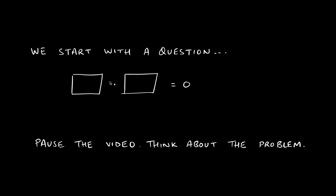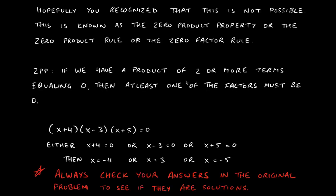So either the zero could be in the first box, or the zero could be in the second box, or they're both zero, because that gives a true statement as well. This idea is known as the zero product property — sometimes called the zero product rule, the zero factor rule, or the zero factor property. They all mean the same thing.